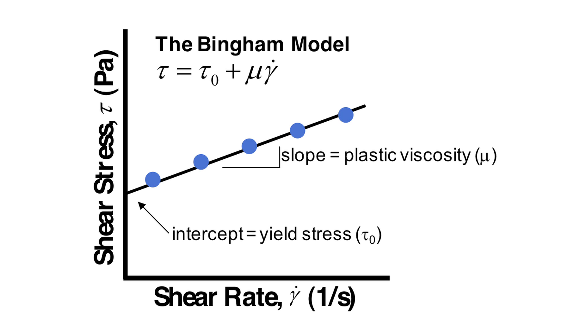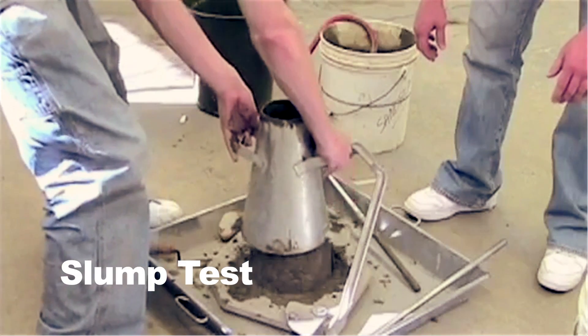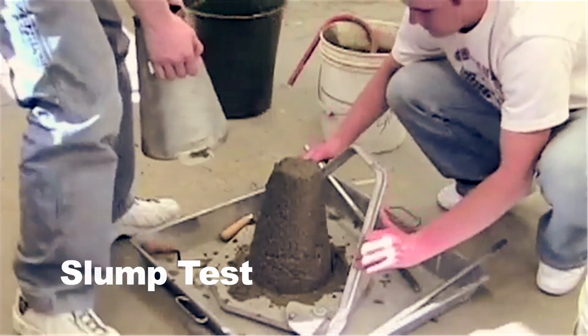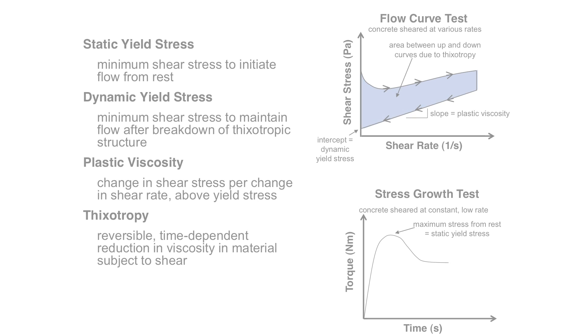Now typically, yield stress is related to the slump. The higher the yield stress, the lower the slump. Concrete with high plastic viscosity is typically termed as being very sticky and cohesive.